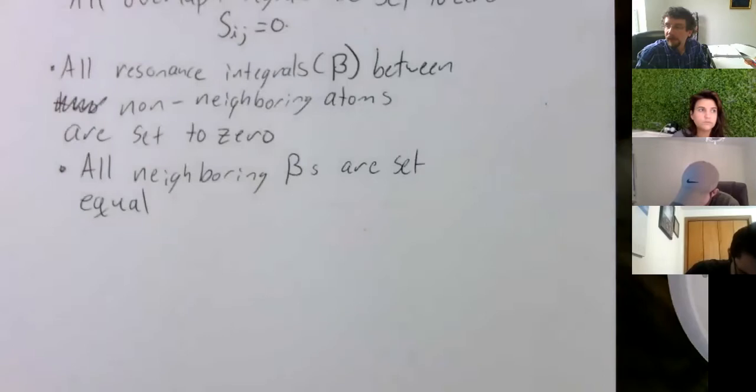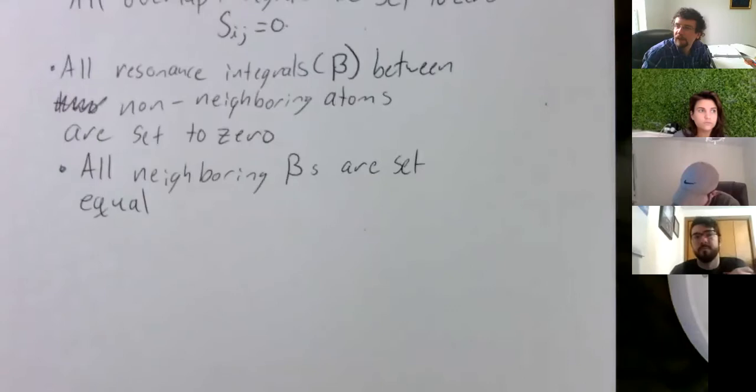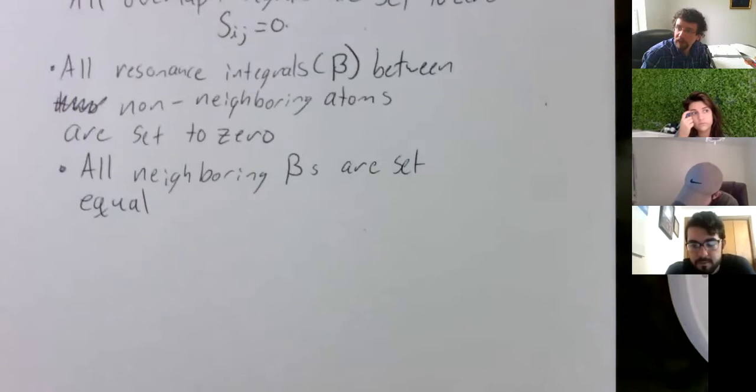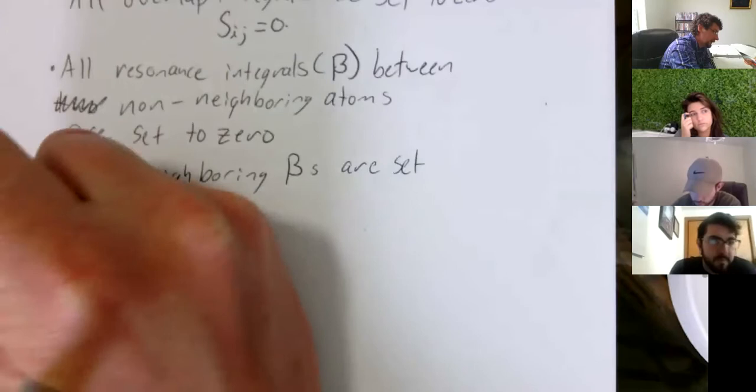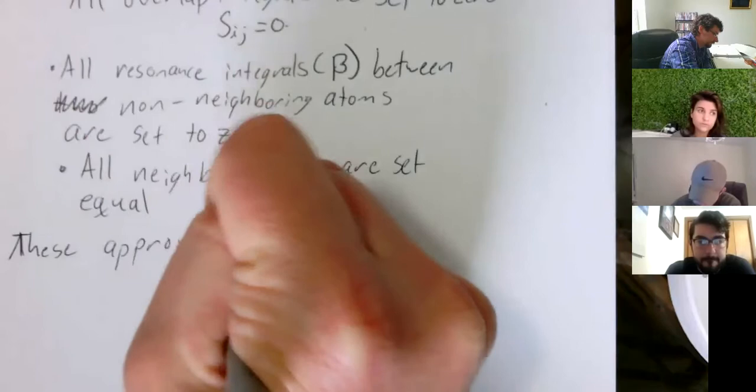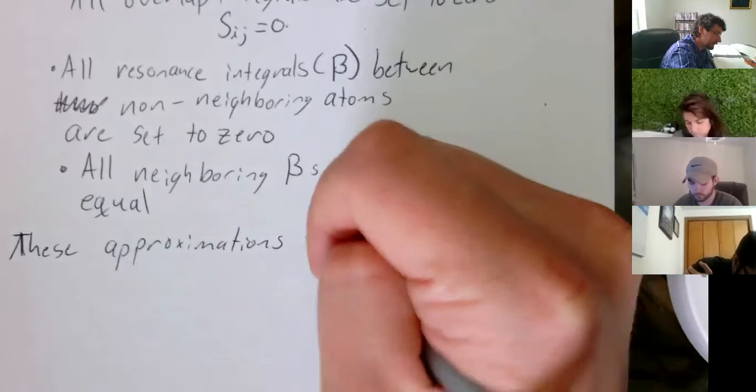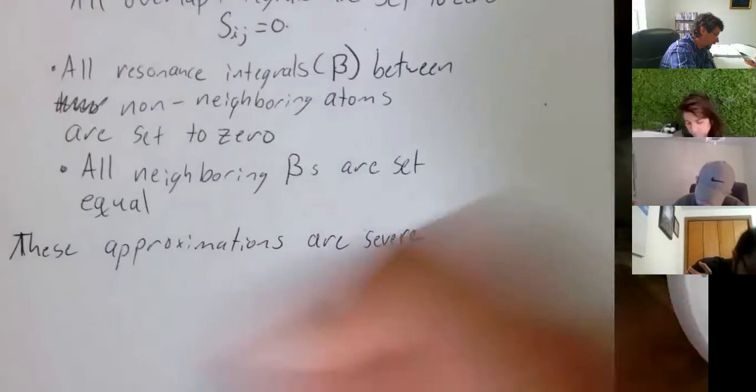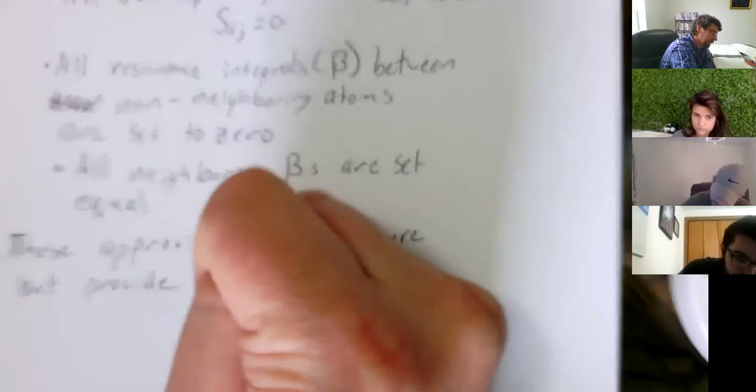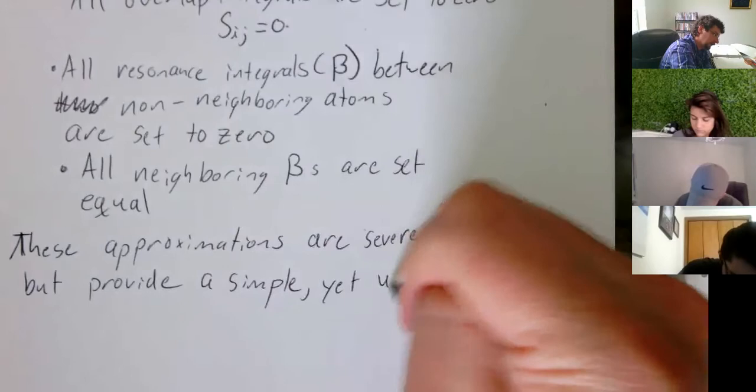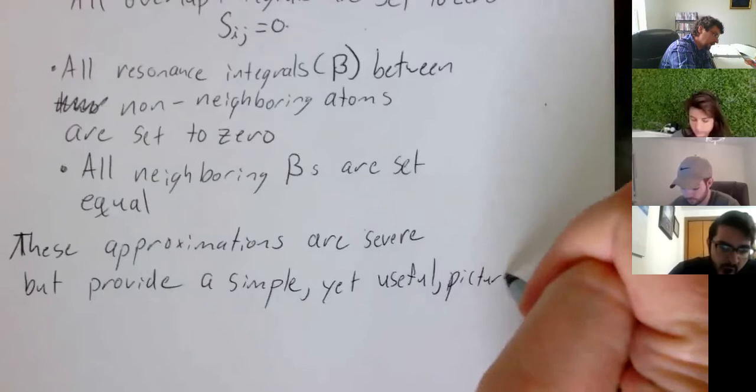Okay, now in Huckel theory, what we do is we look at the pi system. We don't really consider any sigma bonds, that's for extended Huckel. And just regular old Huckel, we just look at the pi system. So these approximations are pretty severe, meaning they're not quite true, but they can still give you a good chemical idea, but provide a simple, yet useful picture of MOs.